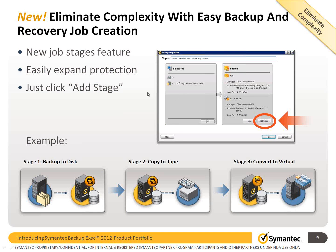For example, you could say: I want to back up this physical machine on a full and incremental basis with a specified schedule. You then add additional stages — back up to disk, then duplicate and copy to tape, and then convert that physical backup into a virtual machine — all within one window by daisy-chaining the 'Add Stage' button.